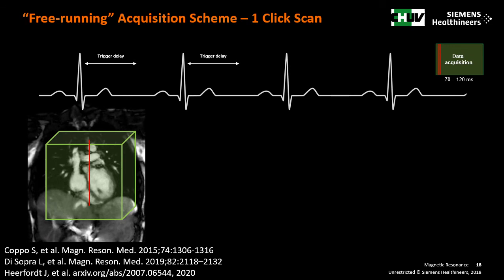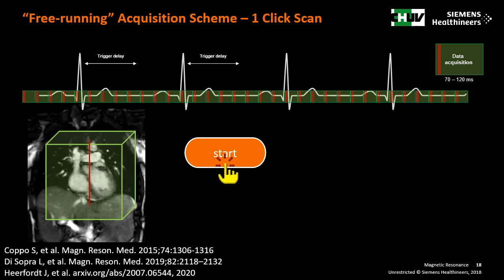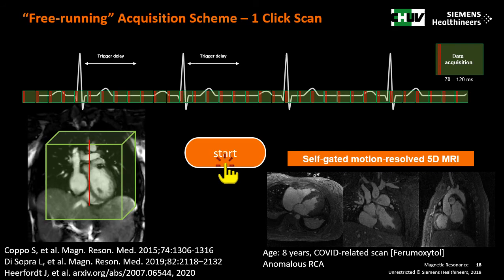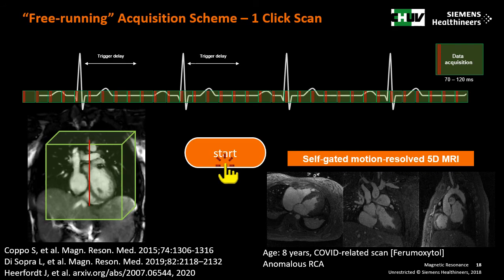In conclusion, we presented a way of performing coronary MRA in a single click. We have a cubic field of view, a one-click start, and continuous acquisition with no user interaction required. Two kinds of reconstructions are performed: a similarity-based anatomical one that happens at the scanner, and a self-gated motion-resolved 5D reconstruction from which cardiac function can be extracted.